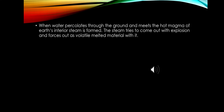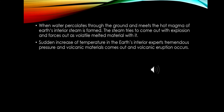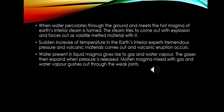Another cause is when water percolates through the ground and meets the hot magma of the earth's interior; steam is formed, and that steam tries to escape with explosive force, carrying volatile molten magma materials with it. Another cause is a sudden increase of temperature in the earth's interior, which exerts tremendous pressure and causes volcanic eruptions. Additionally, water present in liquid magma gives rise to gas and water vapor; the gases expand as pressure is released, and the molten magma mixed with gas and water vapor is forced out through weak joints. These are the main causes of volcanic eruptions.